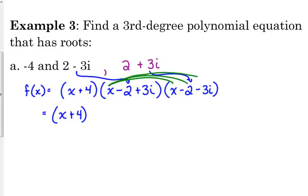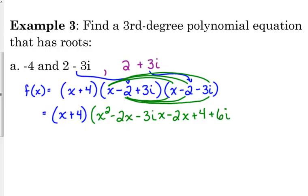Distribute the x to everything in that second set of parentheses. So, x times x is x squared, x times negative 2 is negative 2x, x times negative 3i is negative 3ix. Now, distribute the negative 2. Negative 2 times x is negative 2x, negative 2 times negative 2 is positive 4, and negative 2 times negative 3i is plus 6i.